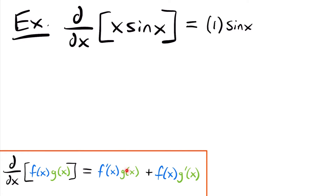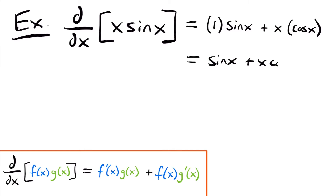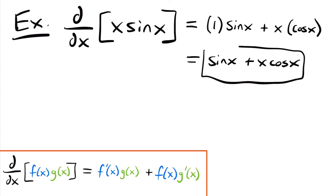Now we're going to add the original first function, which is just x, multiplied by the derivative of our second function, which is cos x — because the derivative of sin of x is cos x. Simplifying, this is going to be equal to sin x plus x cos x. That is the answer to our derivative.